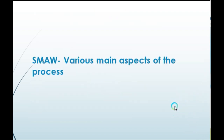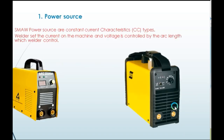Let us understand the various parts of the shielded metal arc welding process. First is the power source. Small power sources are constant current characteristic types. Welders set the current on the machine, and voltage is controlled by the arc length, which the welder controls. On the welding machine, there is only one knob for current adjustment.